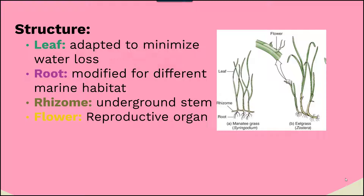The structure of these plants is different from the structure of algae. Plants have a leaf adapted to minimize water loss, a root modified for different marine habitats — possibly more shallow and exposed to water. They have a rhizome, which is an underground stem to help give them security and prevent them from floating away in ocean currents. They also have a flower structure which serves as the reproductive organ, as seen in this example of eelgrass.